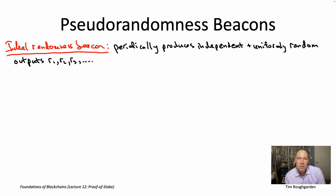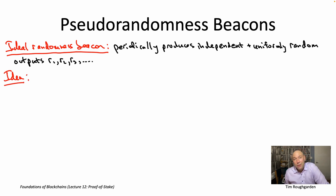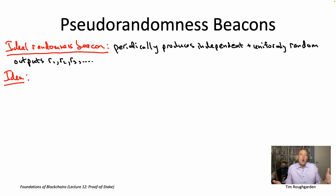Let's proceed to understanding a relatively straightforward way of having a pseudo-randomness beacon in a proof-of-stake protocol. At a high level, the idea is quite straightforward: we need some random bits, or bits that for all practical purposes look as if they're random. We've had this random oracle assumption, which asserts that for some cryptographic hash function like SHA-256, for all practical purposes the output is indistinguishable from literally just a gnome in a box flipping a fair coin 256 times.